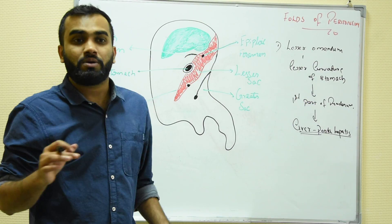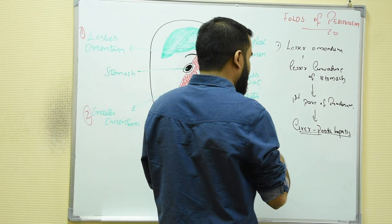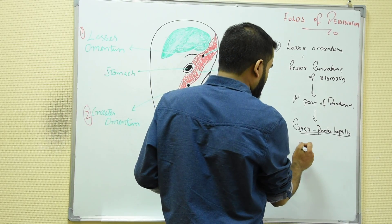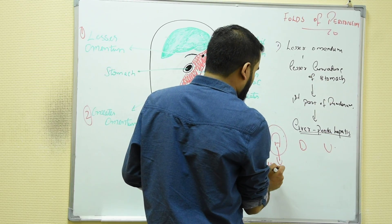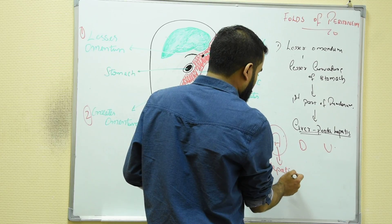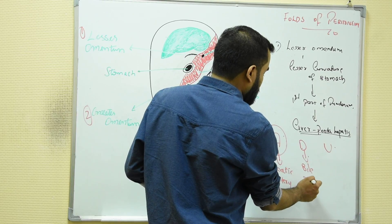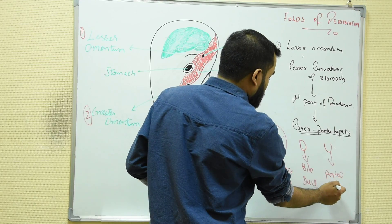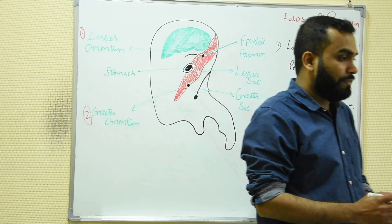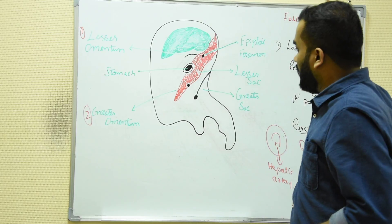Inside the lesser omentum, there are some contents. Remember the mnemonic ADV: A means hepatic artery, D means bile duct, and V means portal vein. So inside the lesser omentum, we have the hepatic artery, bile duct, and portal vein. That is the first main fold inside the peritoneum.